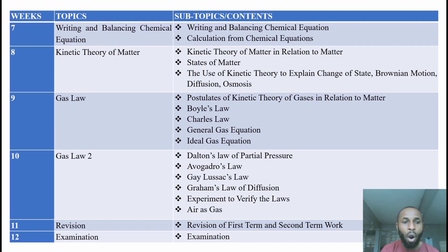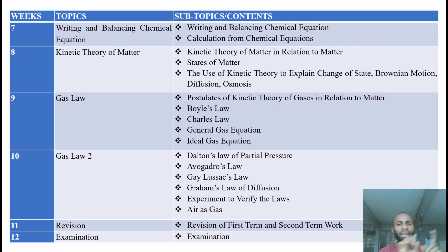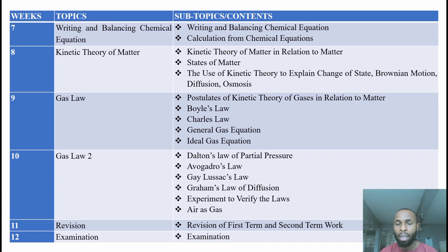Then we are going to look into kinetic theory of matter. This kinetic theory refers back to what we did in our first term — we discussed matter, how we classify it, the particulate view of matter and the physical view of matter. We are also going to use kinetic theory to explain change of states, Brownian motion, diffusion, and osmosis as phenomena that describe and support kinetic theory of matter. From there we go into the gas laws and the postulates of kinetic theory of gases.